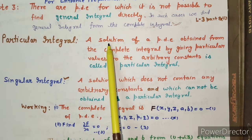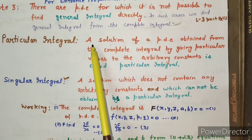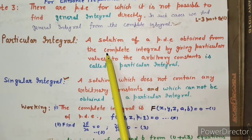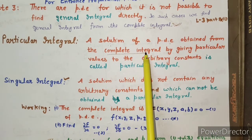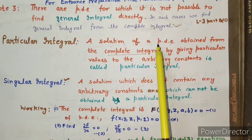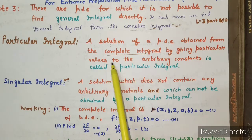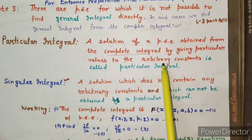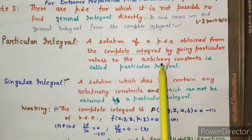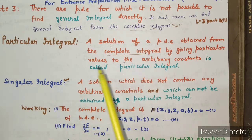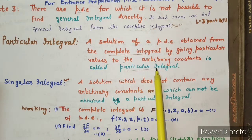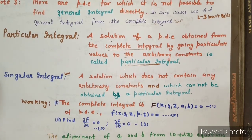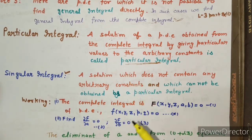A solution of a partial differential equation obtained from the complete integral — that is the solution with constants — by giving particular values to the arbitrary constants a and b, and the solution obtained that satisfies the differential equation, this type of solution is known as the particular integral. So you directly take the complete integral, assign specific values to the constants, and obtain this solution.